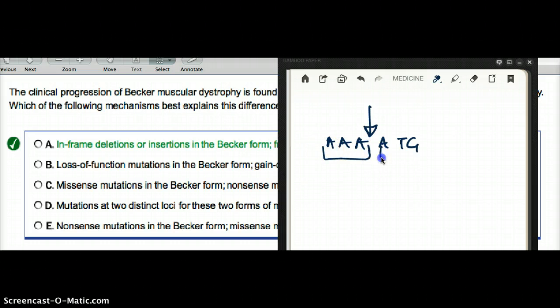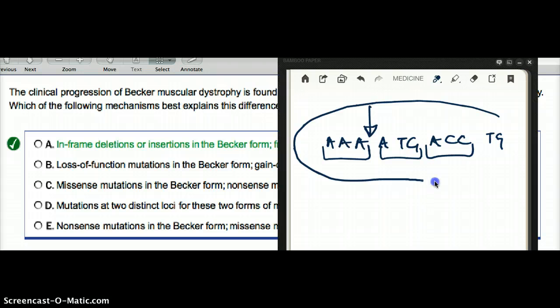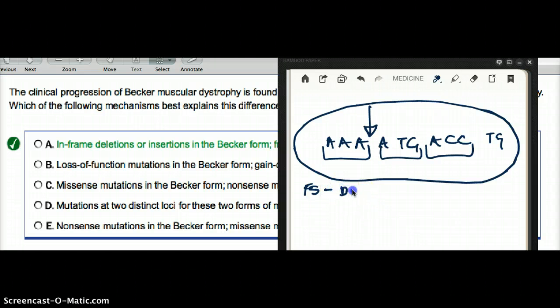So let's say there's three here, there's three here. Let's say ACC and TG. See, this is not a multiple of three. This is what happens. This is the classical definition of frameshift. This is seen in Duchenne.